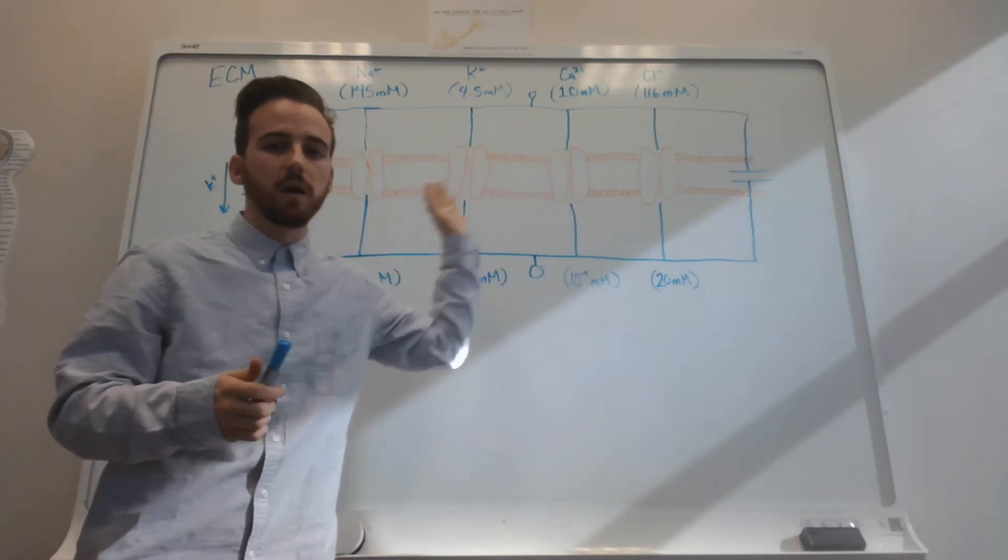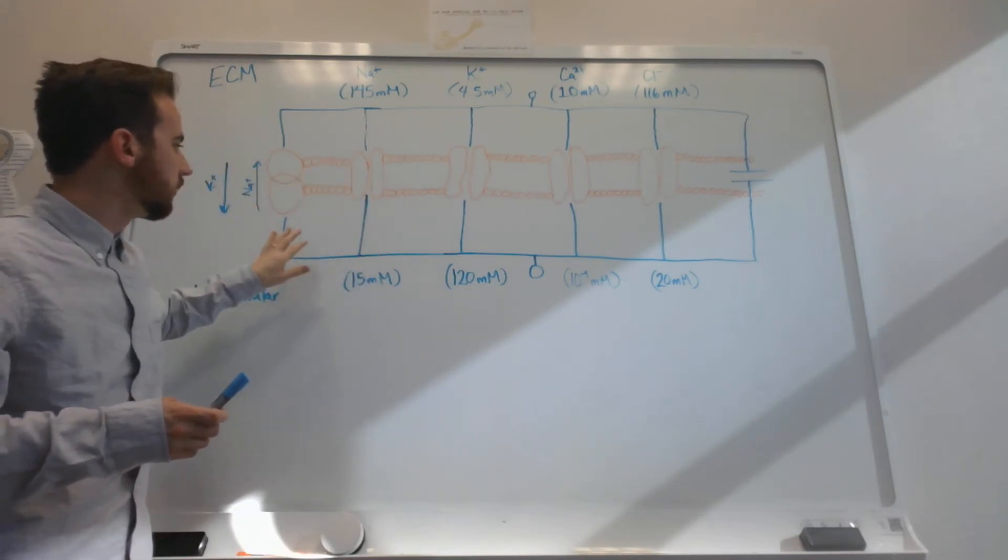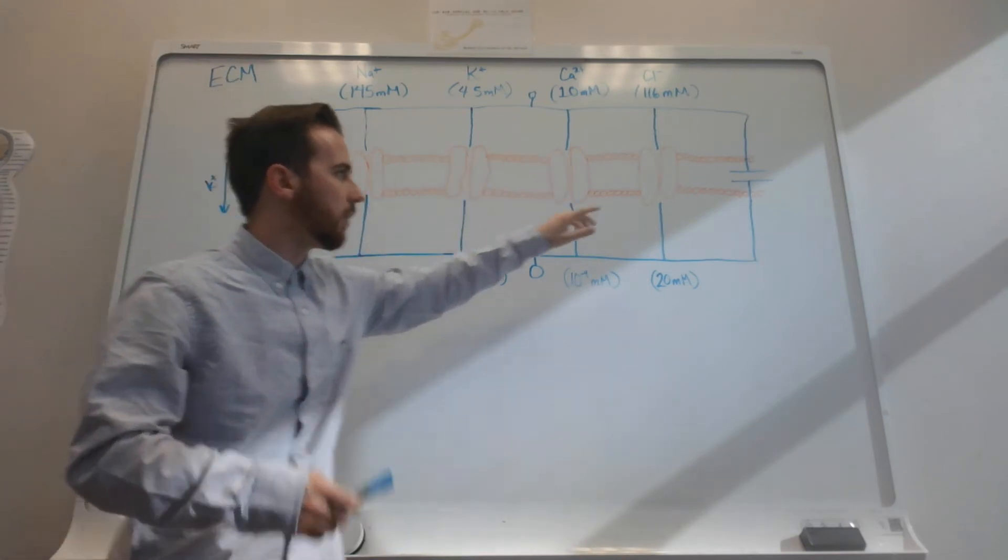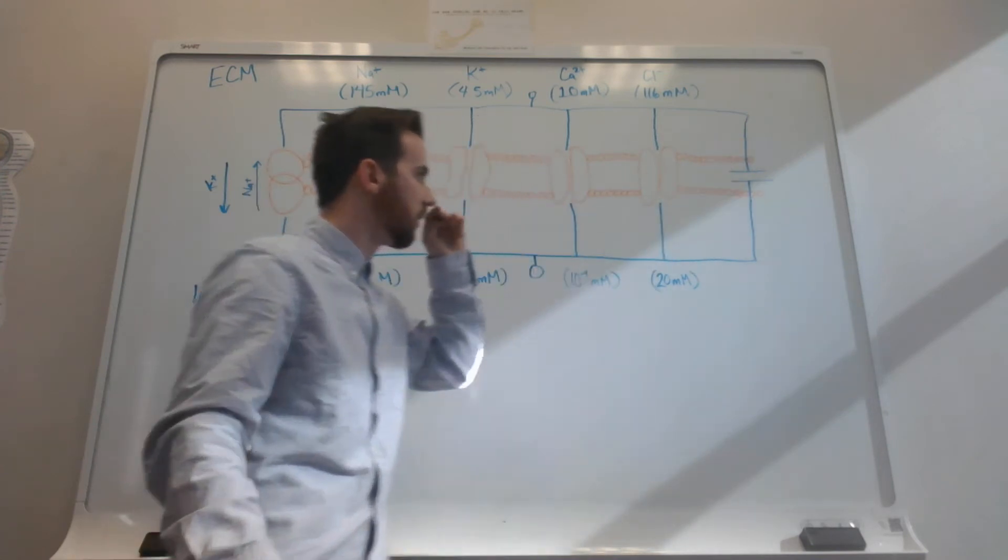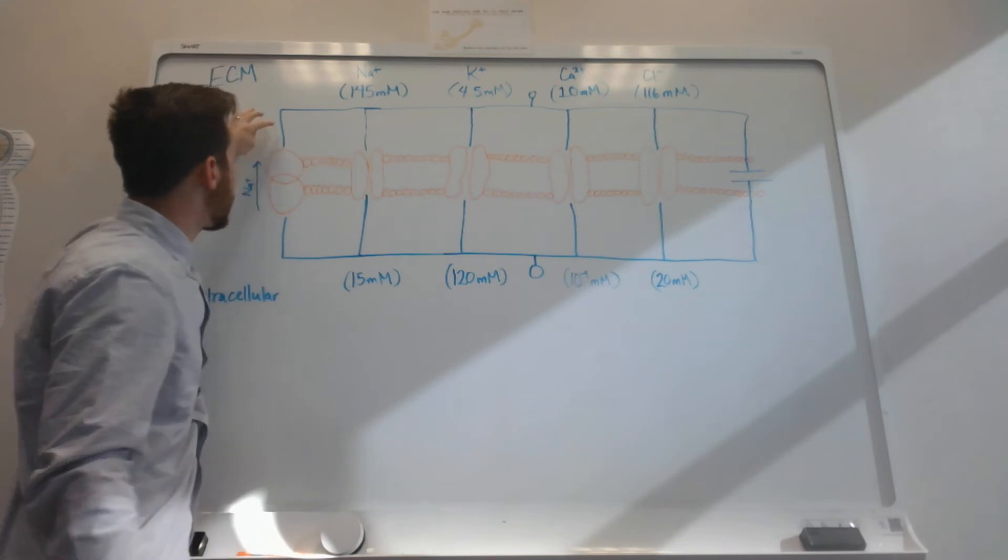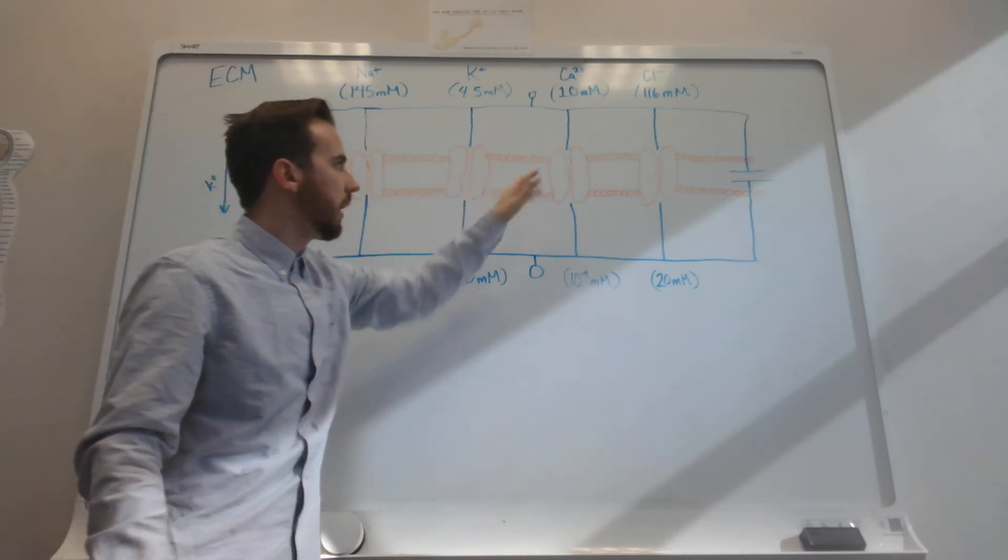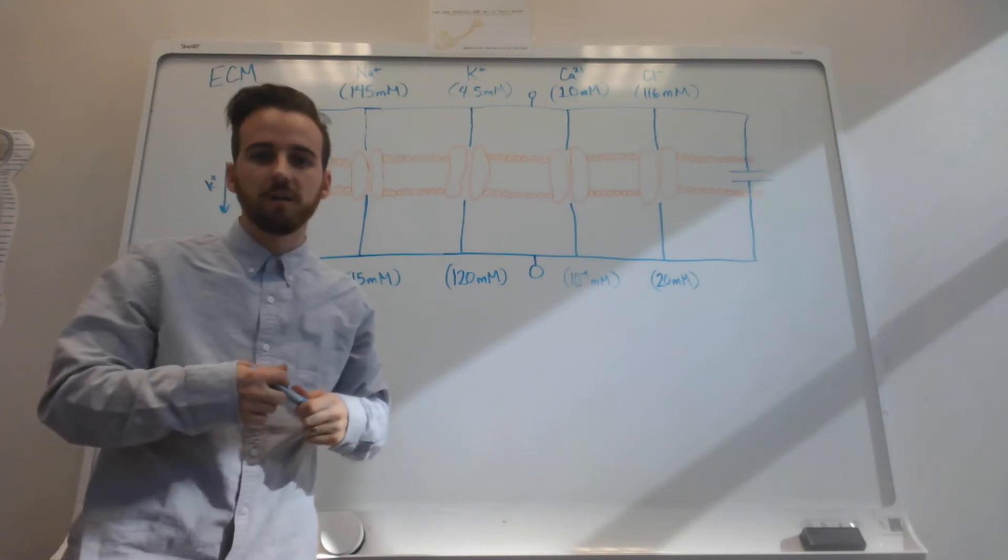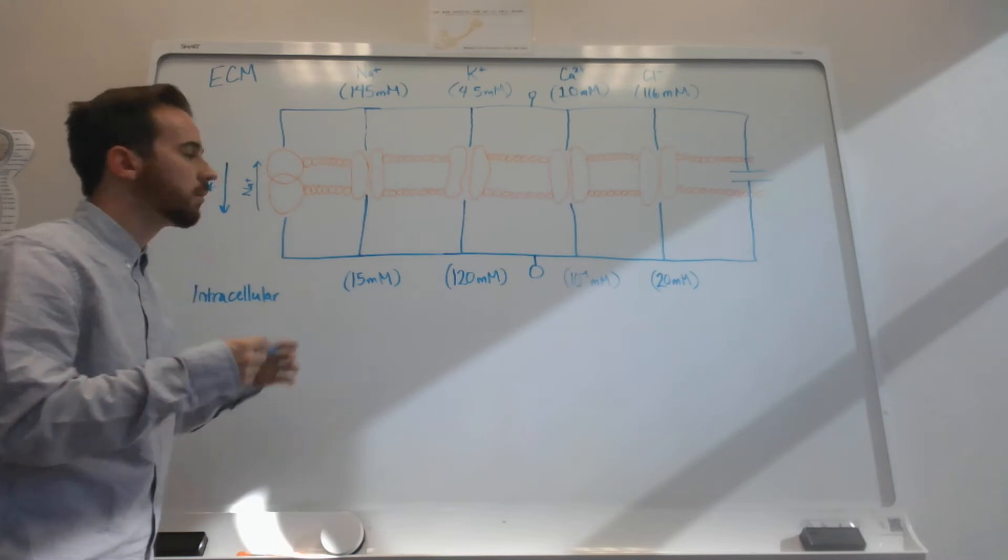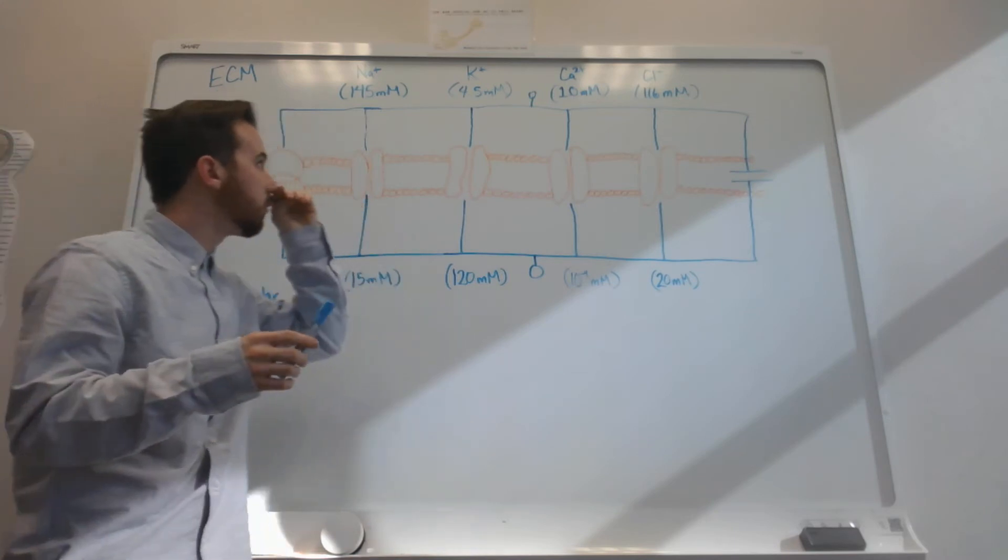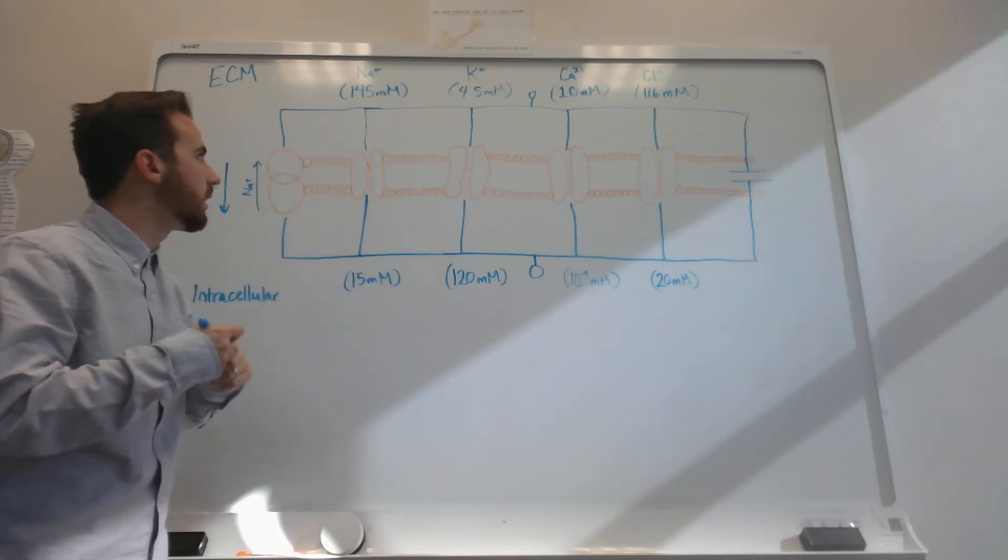I've drawn this membrane kind of superimposed with this circuit that has our capacitor, which represents the membrane, and the pumps, resistors, and I'm going to draw our batteries here in a second. The batteries, in this case, are actually created by these concentration gradients.